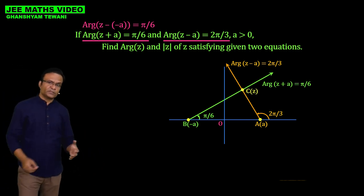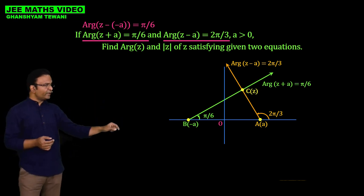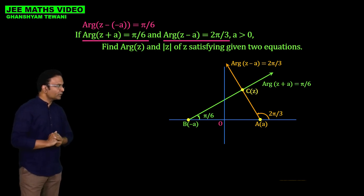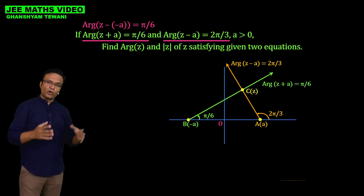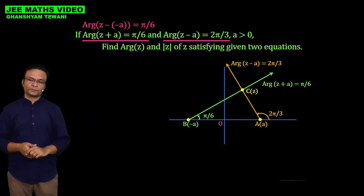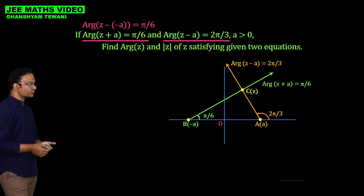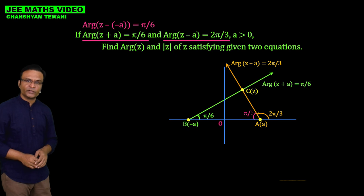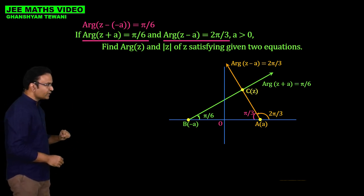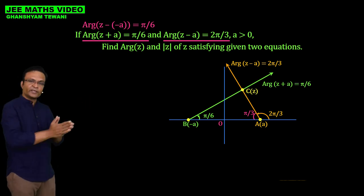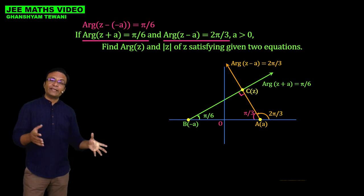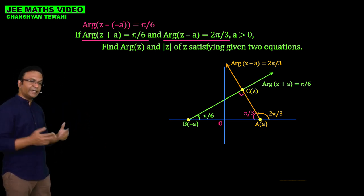We need to find the argument and modulus of z at point c. Observing the geometry, we have triangle a, b, c. The external angle at a is 2π/3, so the internal angle at a is π/3. The angle at b is π/6. The sum of these two angles is π/2, which means the angle at c is 90 degrees — angle ACB is a right angle.